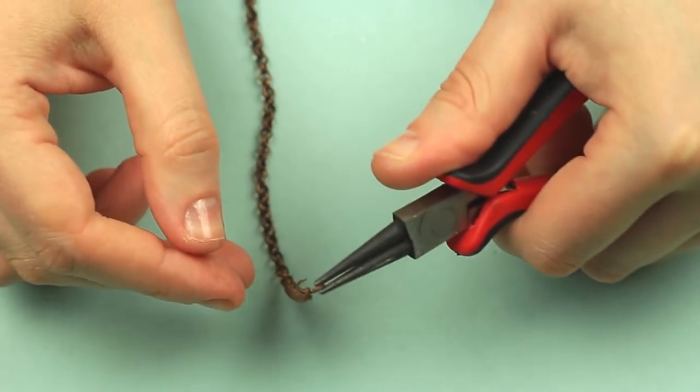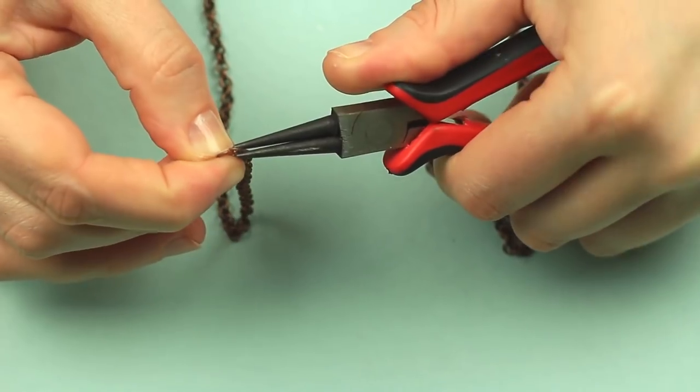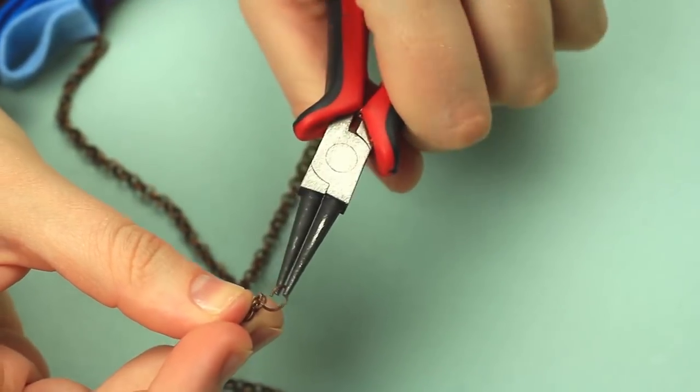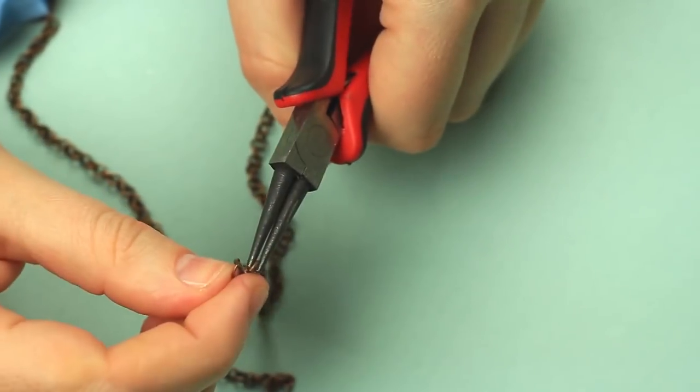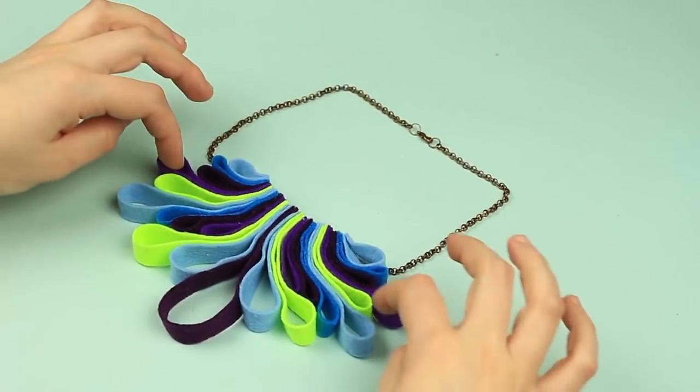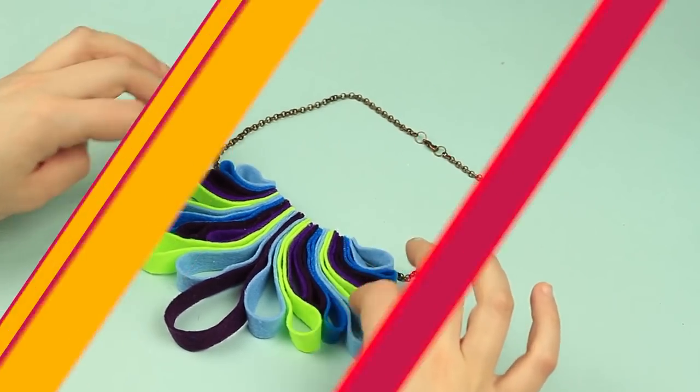Put two jump rings on the end chain links. Attach a lobster clasp. The stylish bib necklace will perfectly complete your outfit.